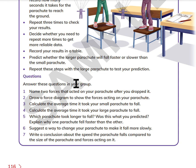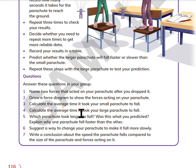Answer these questions in your group: Name two forces that act on your parachute when you drop it. Draw a force diagram to show the forces acting on your parachute. Calculate the average time it took your small parachute to fall, and the average time for your large parachute. Which parachute took longer to fall — was this what you predicted? Explain why one parachute fell faster than the other. Suggest a way to change your parachute to make it fall more slowly. Write a conclusion about the speed the parachute falls compared to its size and the forces acting on it.